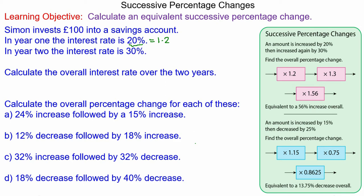In year two the interest rate is 30 percent. So again 100 percent added to 30 percent, because it is an interest, which is 130 percent. That is 130 divided by 100, which is 1.3.